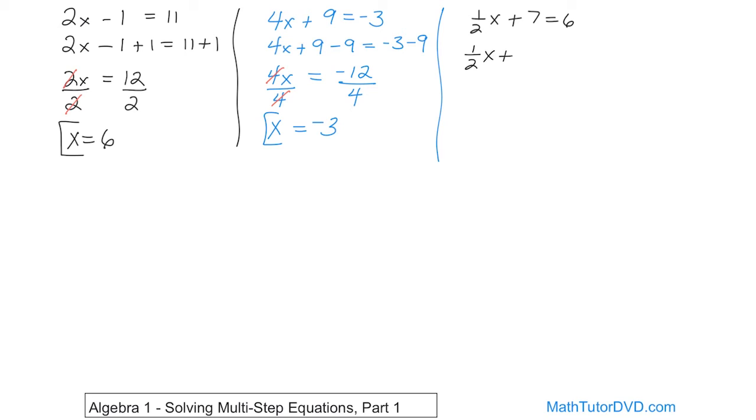So 1 half x plus 7. We'll subtract 7 from the left. And on the right-hand side, it's going to be equal 6 minus 7. So we'll subtract 7, essentially, from the left and subtract 7 from the right. So on the left, all we'll have left is 1 half x. And on the right, 6 minus 7, I think you can convince yourself, is negative 1.